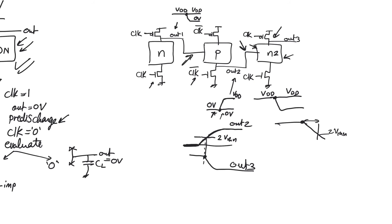N stages are very sensitive to inputs that decide they want to be 0 too late, but they are not sensitive to inputs that decide they want to be 1 too late, because that is a conservative state. At the input of the P stage, the output from the N stage starts at VDD and then goes down to 0. The PMOS at the input of the P stage turns on only when the input drops to about 2·|VTP|, so it turns on a little later — this only adds a small delay but does not cause catastrophic charge loss on the output node of the P stage. So we can cascade stages as long as we alternate between N stages and P stages.